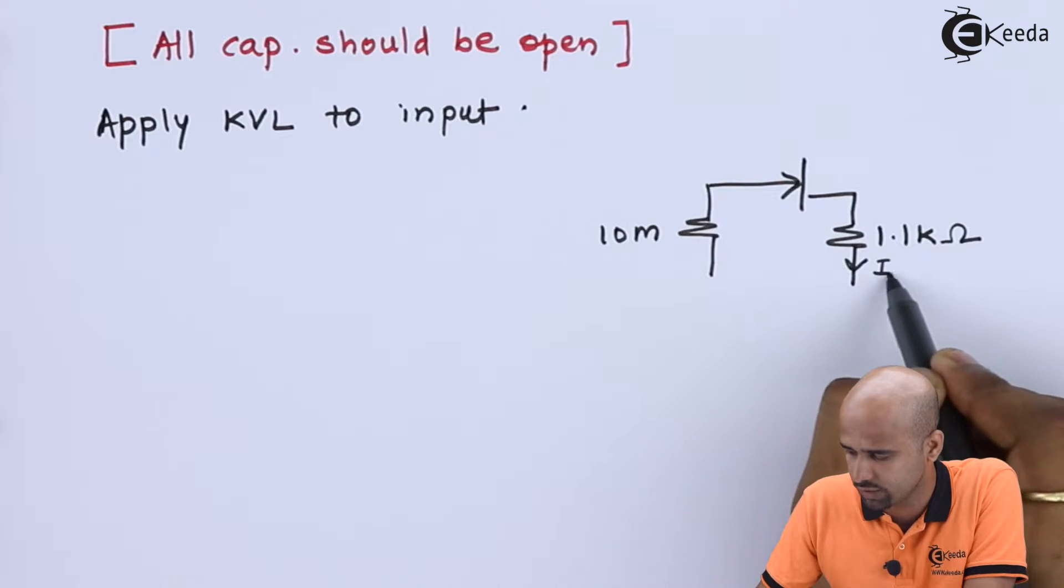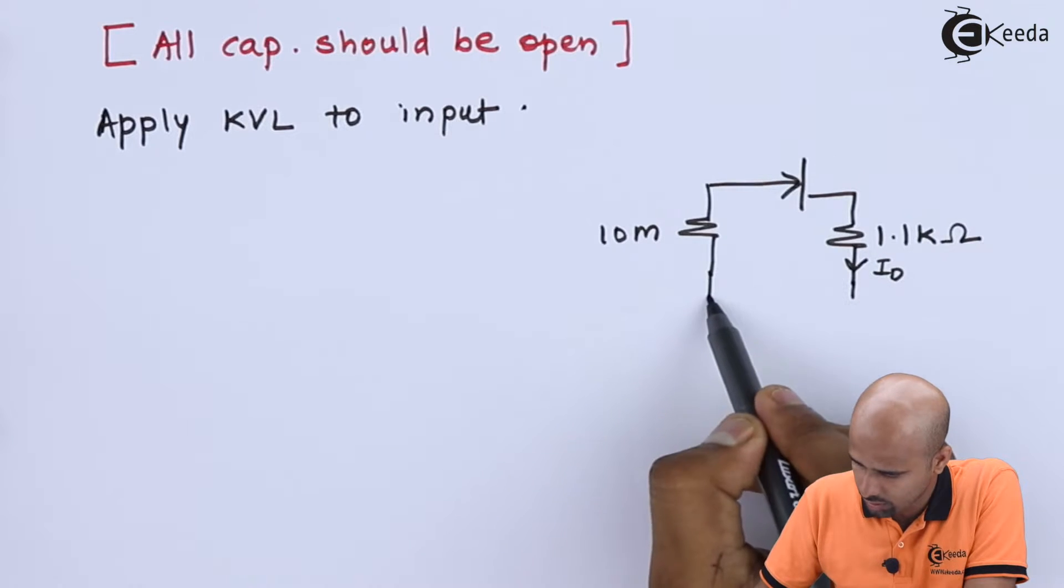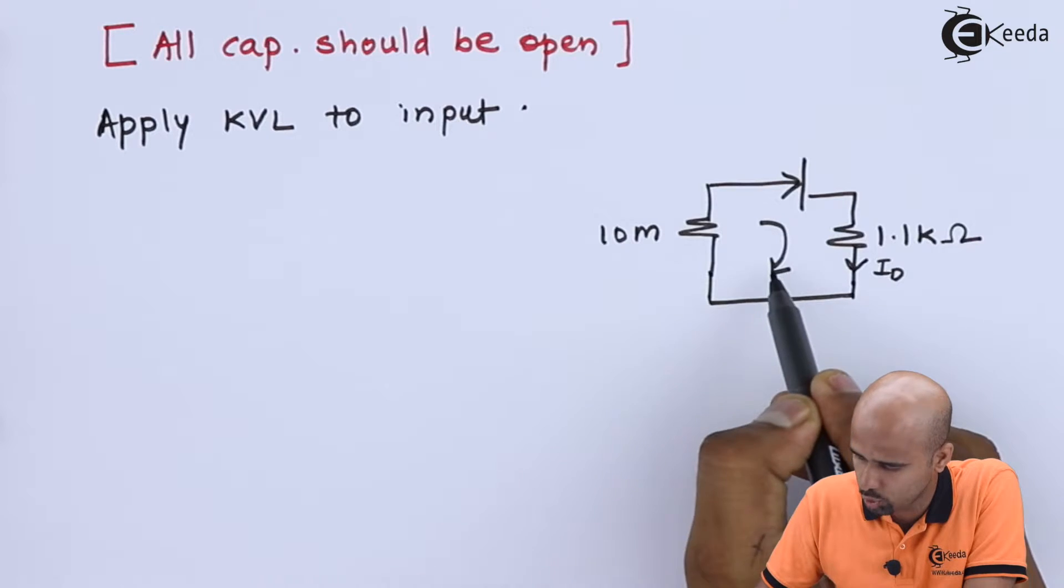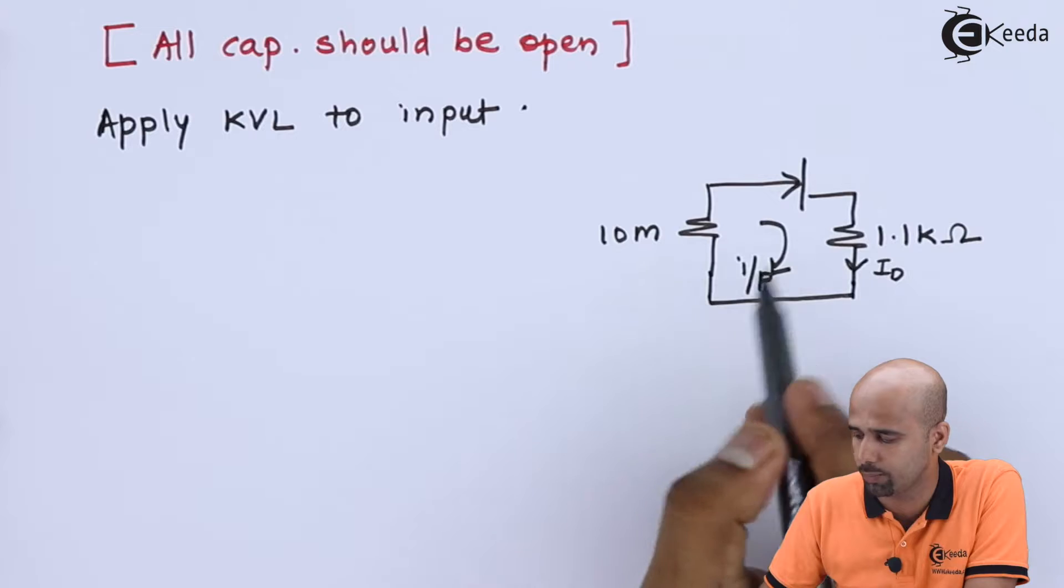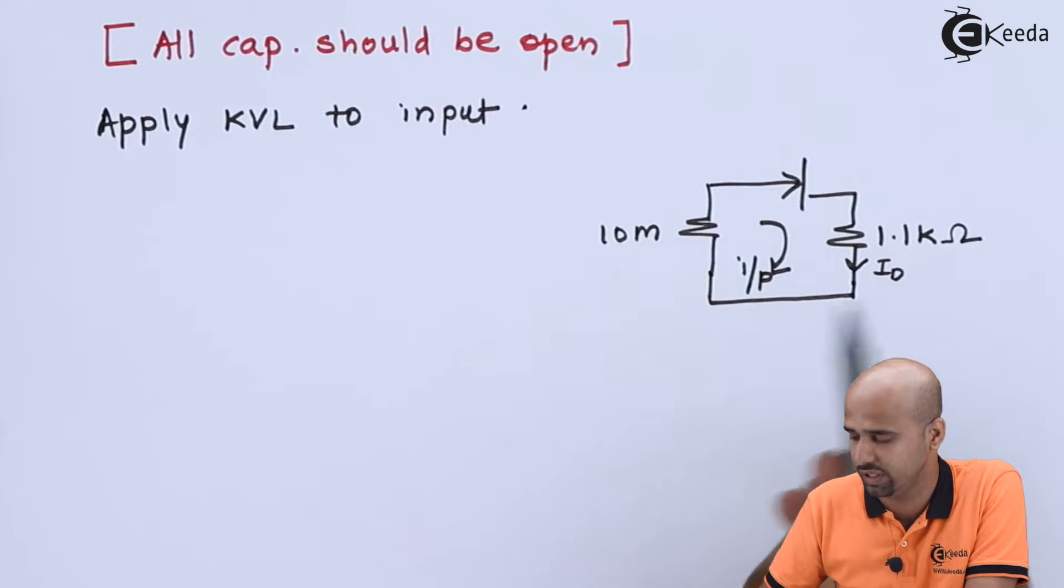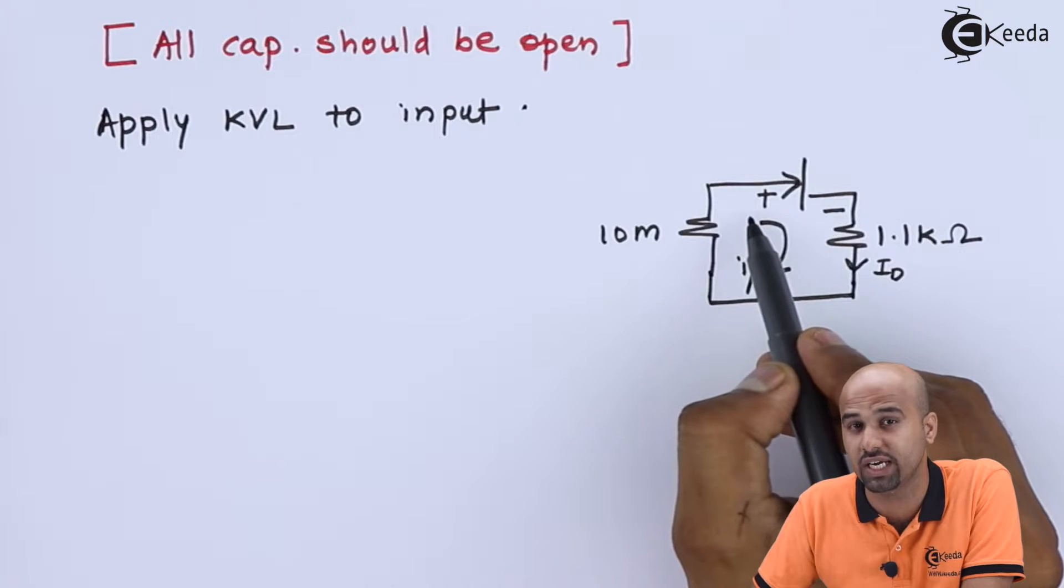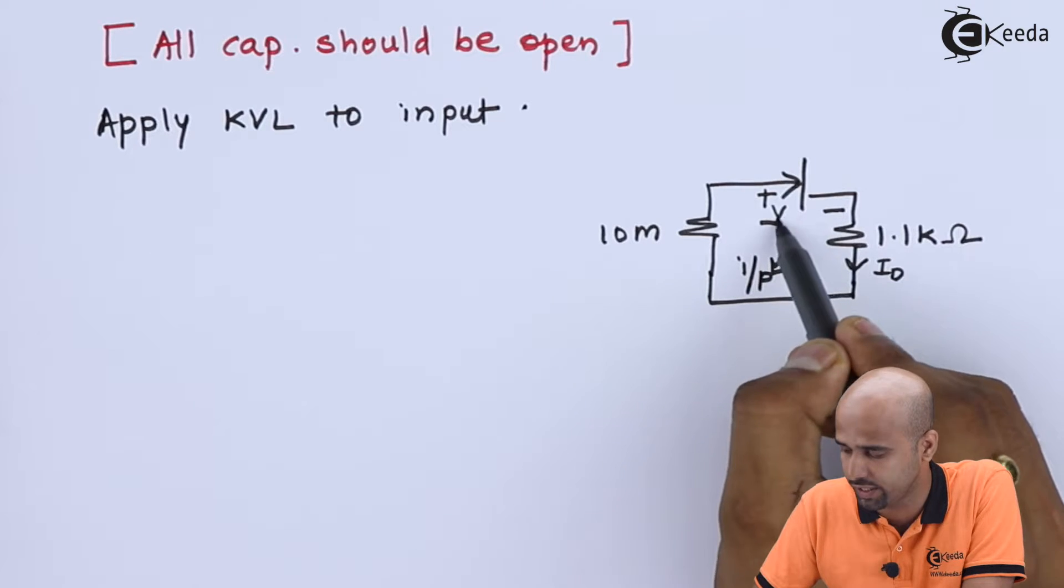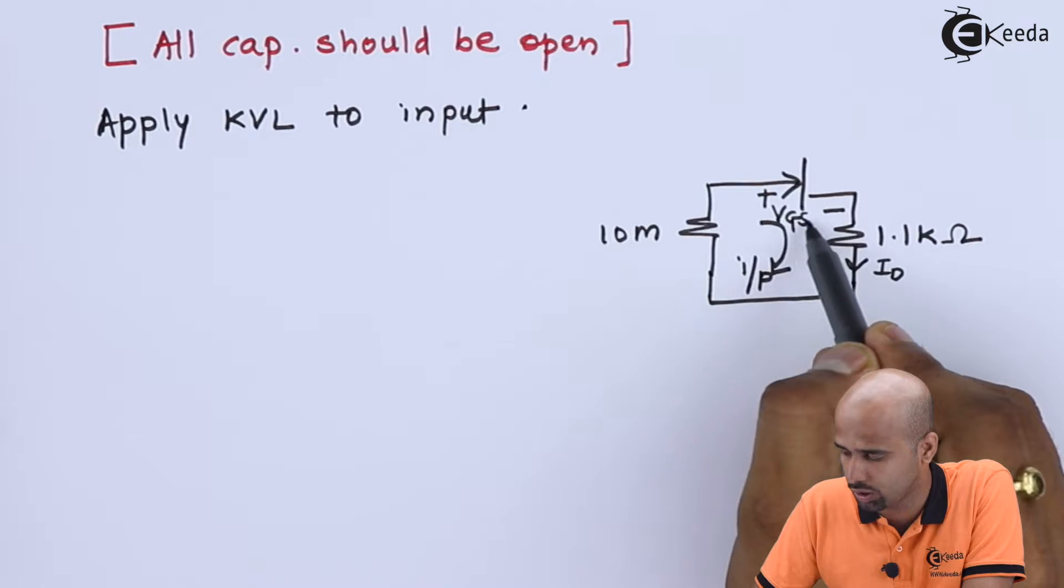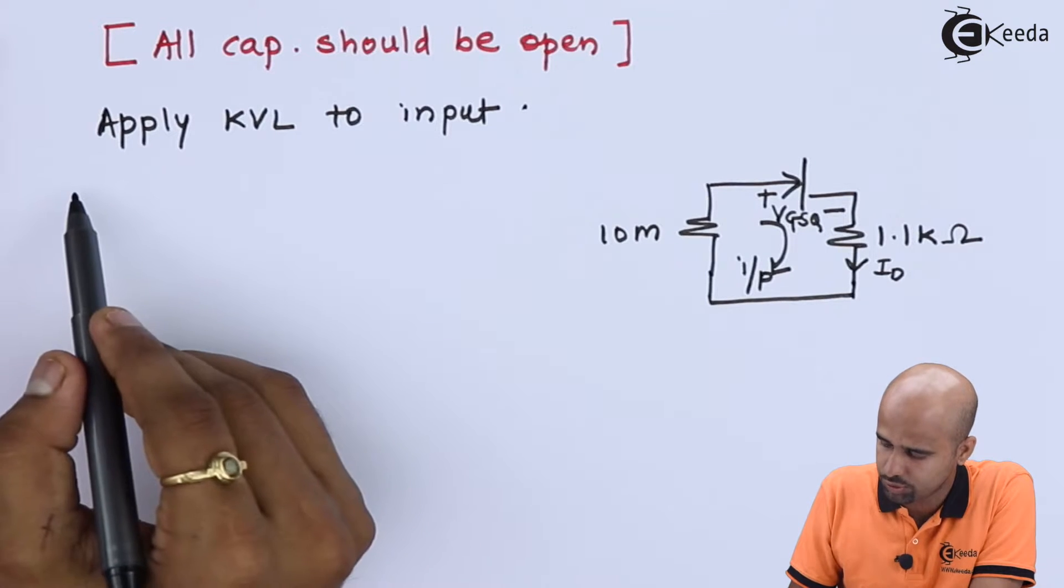Current which is flowing is in the form of ID and here I will be getting input loop. So in this loop we have to apply KVL. Unlike BJT, we don't have the value of VGS. In BJT we have the value of VBE as constant value 0.7, and here we have to find out this value for my operation of particular circuit, VGSQ.